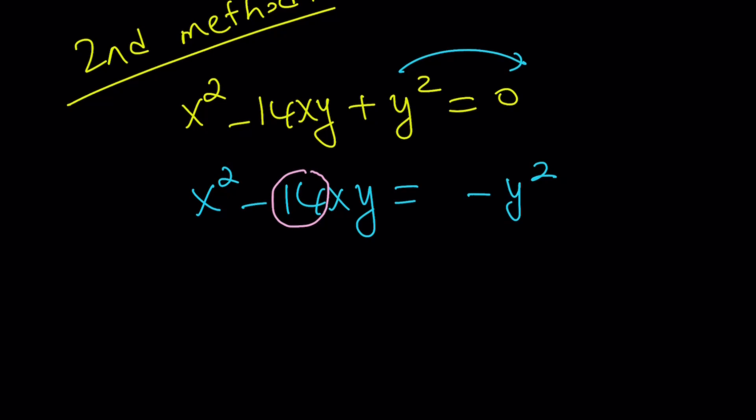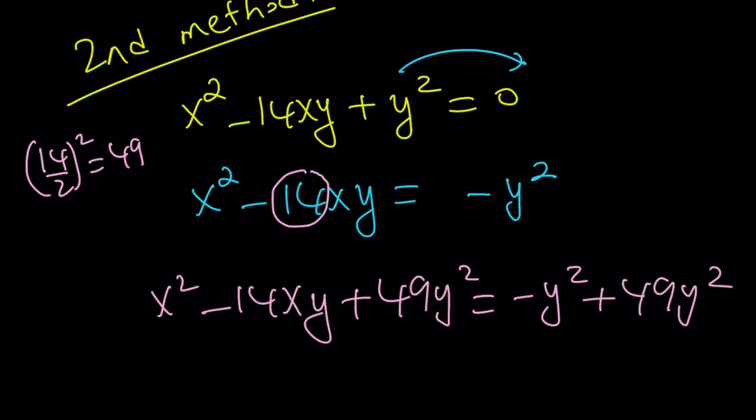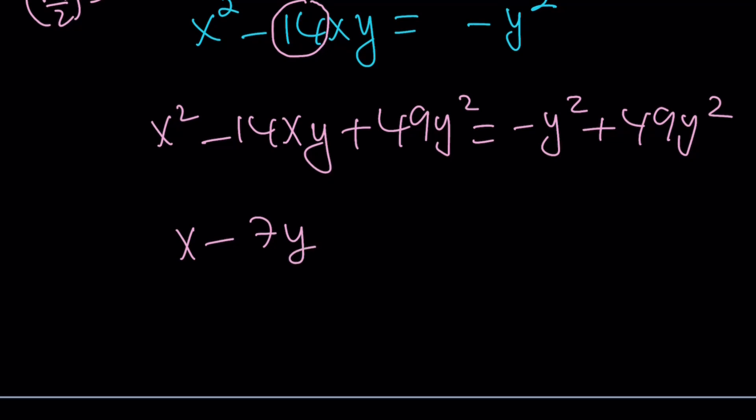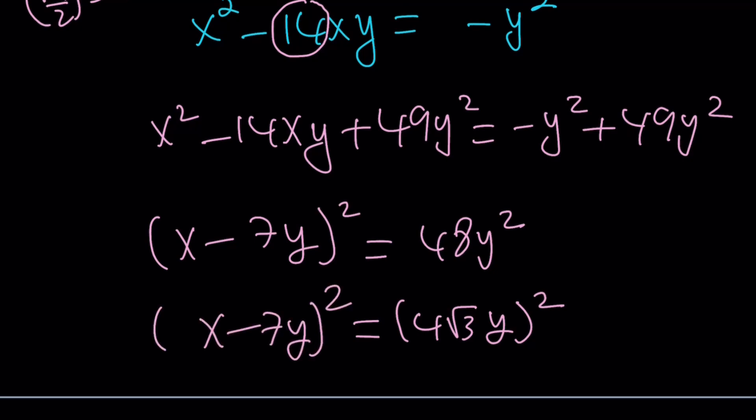And that can be obtained easily by considering the following. What is a half of 14 squared? Half of 14 squared is 49. So what I need to add is then 49y squared to both sides because then we'll get a perfect square. And isn't that perfect? Now, this becomes x minus 7y squared. And the right-hand side becomes 48y squared, which can be written as 4 root 3y quantity squared. Is that term familiar to you now? 4 root 3? That came up before, right?